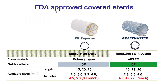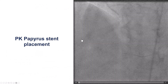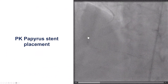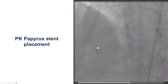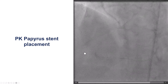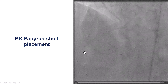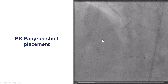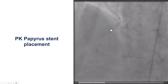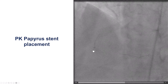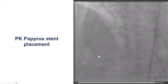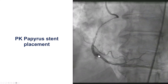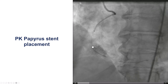These are the covered stents for sealing this perforation, with PK Papyrus being the most commonly used. After we continued to have staining and extravasation, we decided to place the Papyrus. Covered stents can be challenging to deliver, but fortunately, having the guide extension essentially all the way to the distal RCA, we were able to successfully deliver a 3.5 by 26 millimeter PK Papyrus stent.